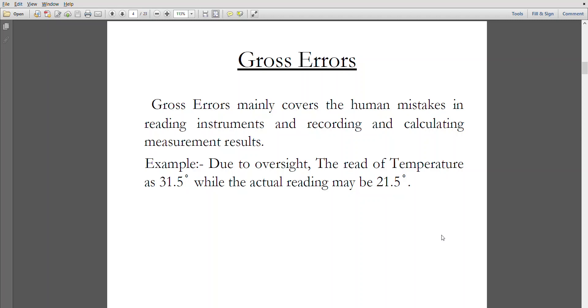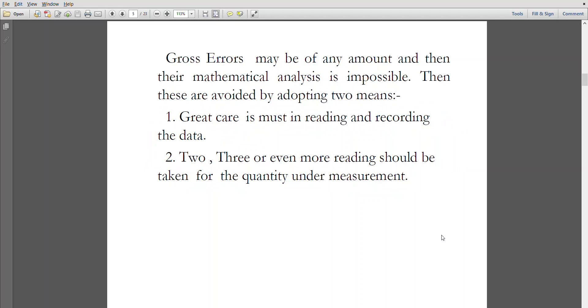Example: due to oversight, the temperature reading was read as 31.5 degrees while the actual reading may be only 21.5 degrees - so that's 10 degrees of error. Gross errors may be of any amount and their mathematical analysis is impossible.